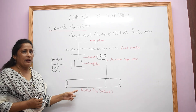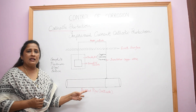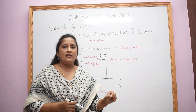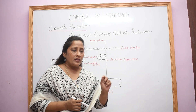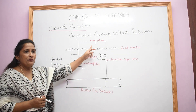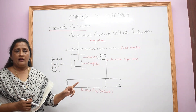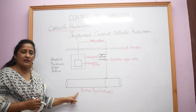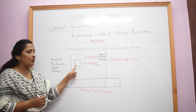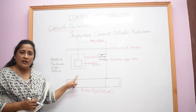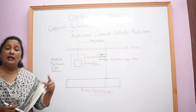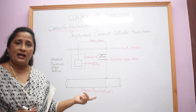In this method, an impressed current is applied in the opposite direction to nullify the corrosion current. The current is derived from a battery or an AC line. The metal structure to be protected is made as cathode and connected to an anodic metal. In this method, the anodic metal need not be more reactive than the structure.